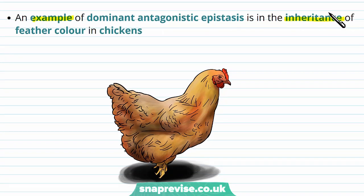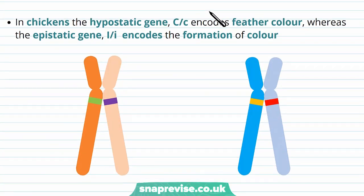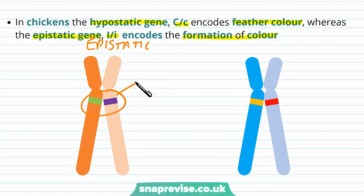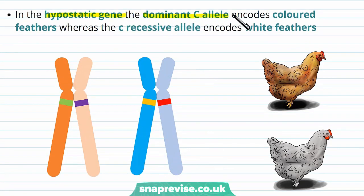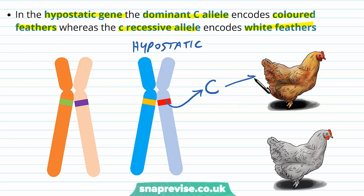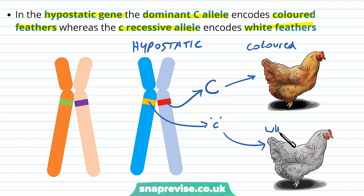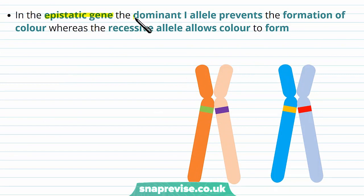In chickens, the hypostatic gene is given by the letter C and encodes for feather colour, while the epistatic gene is I and encodes for the formation of colour. In the hypostatic gene, the dominant capital C allele encodes for coloured feathers, but the recessive c allele encodes for white feathers. In the epistatic gene, the dominant I allele prevents formation of colour if it's present, whereas the recessive i allele allows the colour to form. We only need either II or I little i — at least one dominant allele — and this will always cause antagonism of the colour gene.